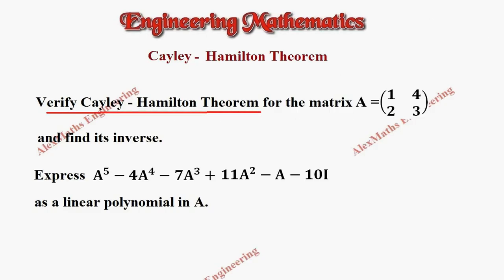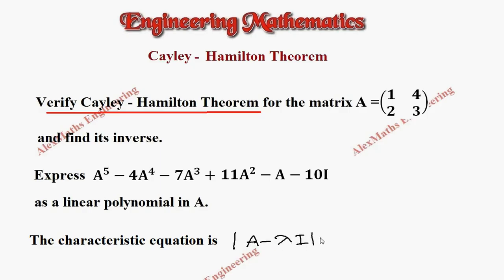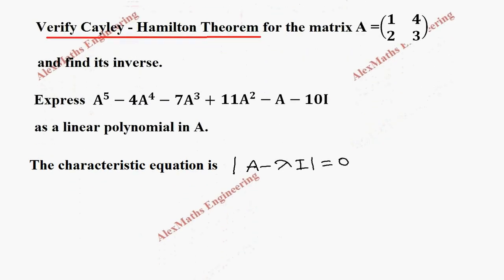So first we have to write the characteristic equation, which is nothing but the determinant of A minus lambda I equal to 0. So this will become the determinant of 1 minus lambda, 4, 2, and 3 minus lambda equal to 0.